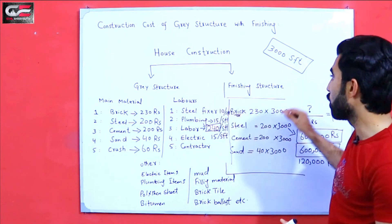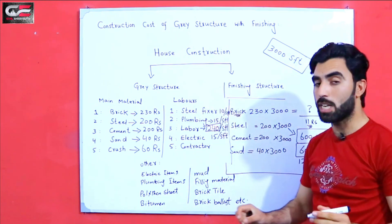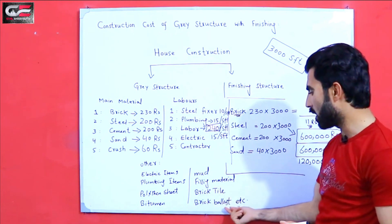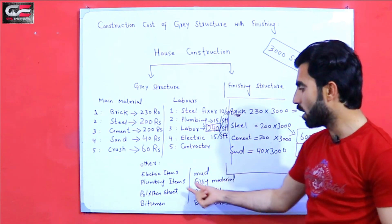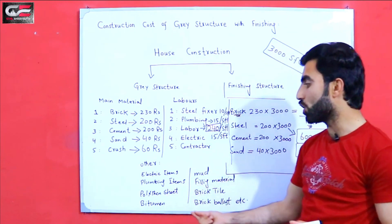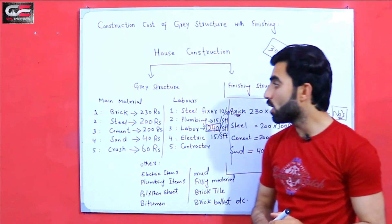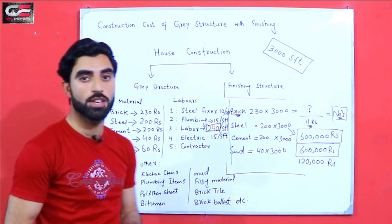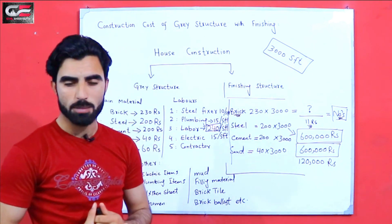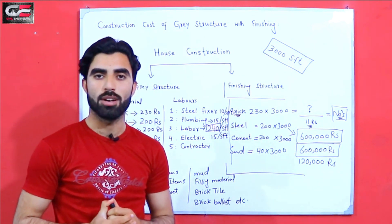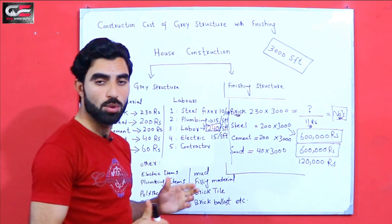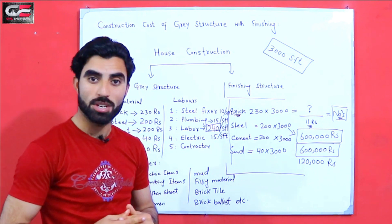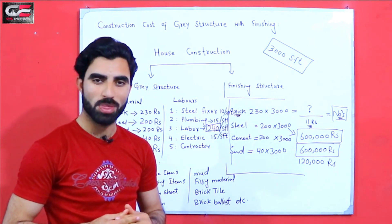In the next video I will discuss the finishing materials, especially for brick blast, filling, plumbing items, polythene sheet, bitumen, etc. This is very important to know about the construction cost of gray structure with finishing, and this is from my personal experience. I hope you will have learned something new related to this topic. If you have any questions, you can comment and I will try to reply. Thanks for watching. See you in the next video. Goodbye.